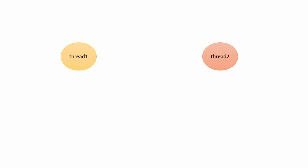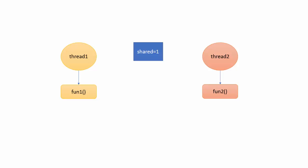Now we are going to create two threads: thread1 and thread2 in the program. Both threads are going to call two different functions. Thread1 is going to call a function fun1, whereas thread2 is going to call a function fun2. Both these functions are going to work upon a variable whose name is 'shared' and whose initial value is 1. Fun1 is going to increment the value of the shared variable, whereas fun2 is going to decrement the value of the shared variable. So the ultimate resultant value of the shared variable should be 1.